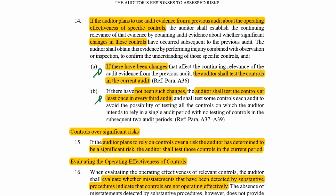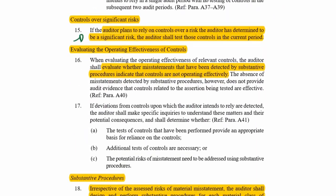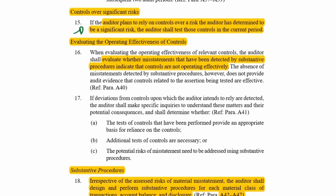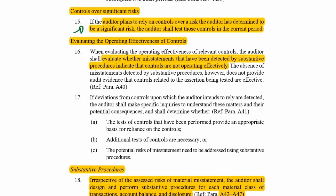Very important: if it's a significant risk, you must test the controls in the current period — you cannot use the prior-year rule. When testing operating effectiveness, you need to see whether the control is effective; if it is not, you will have to perform substantive procedures.